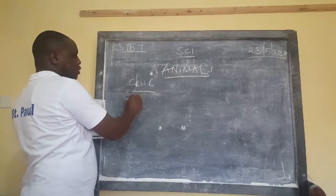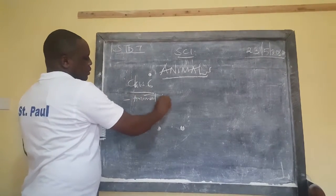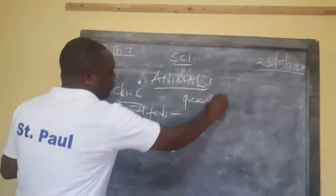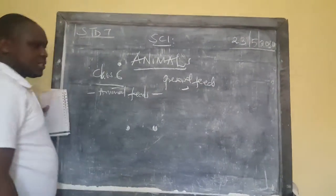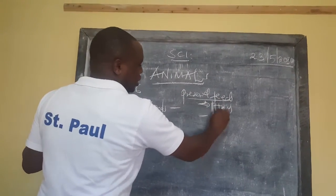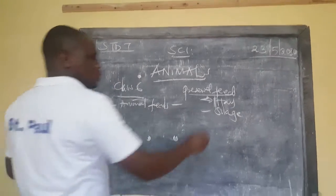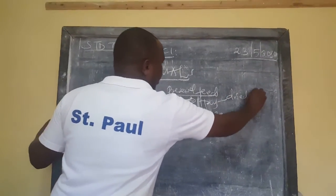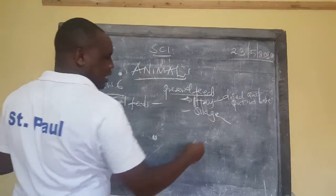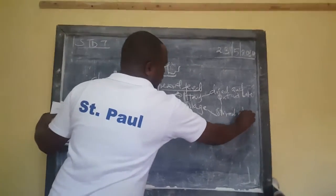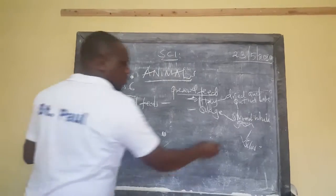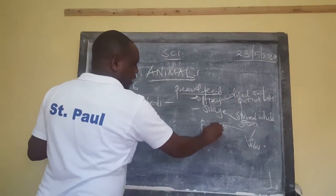In class 6 you dealt with animal feeds. You talked about reserved feeds — these are the ones that are kept for future use. You talked about hay and silage. Hay is dried and put into bales before storing, while silage is stored while still green in structures we call silos.